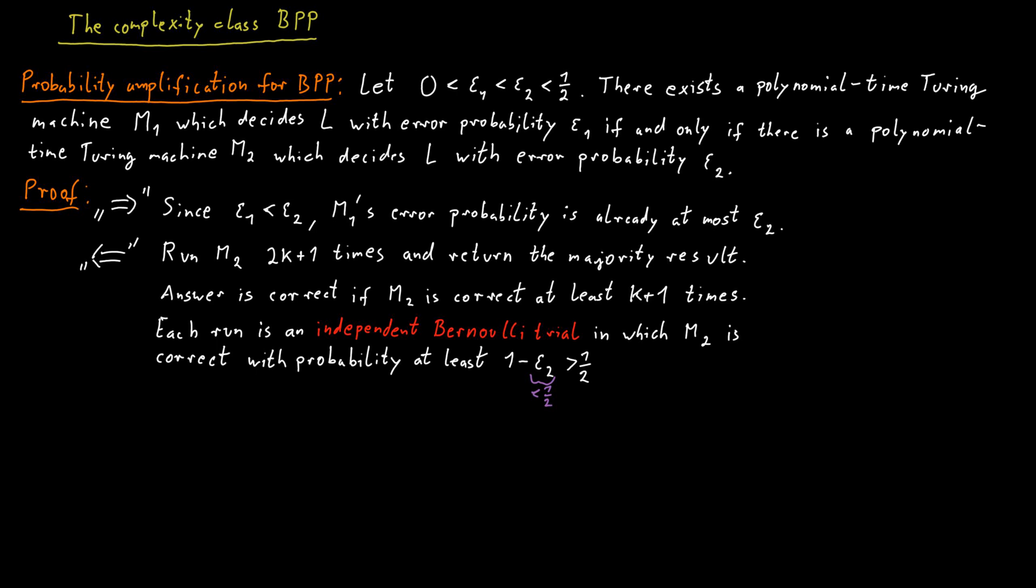I will spare you the proof for the Chernoff bound and just state the result. So what Chernoff tells us is that the probability that the majority opinion of these 2k plus 1 many runs is incorrect is bounded by e to the power of minus k times (1/2 minus epsilon 2) squared. So this will be the bound on the error probability of this machine M1 we are about to construct.